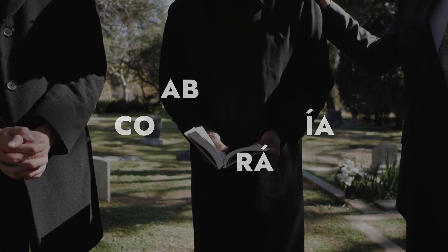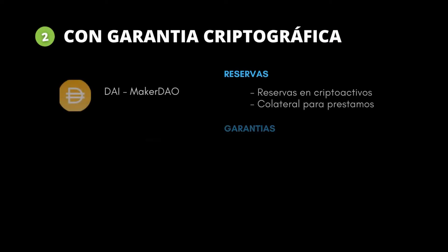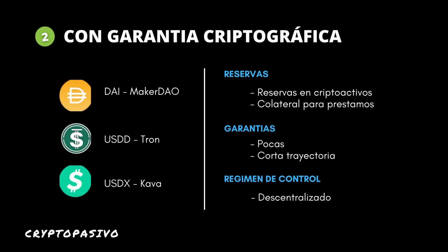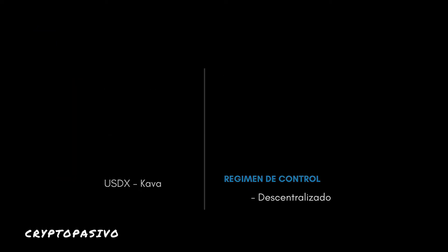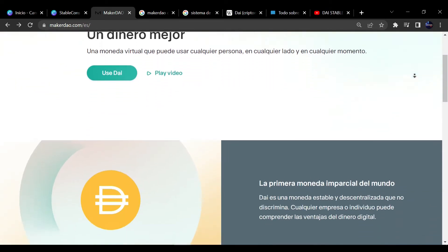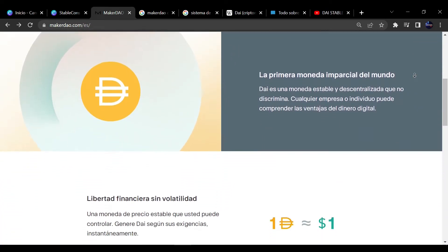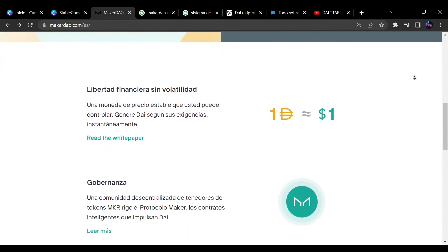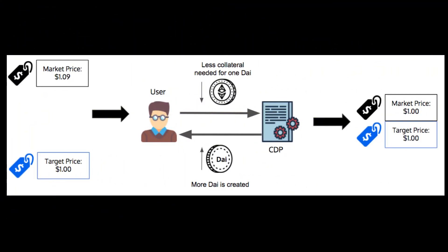Este tipo de stablecoins están respaldadas por un colateral, un criptoactivo que actúa como fondo de reserva para la moneda estable. El caso más famoso es el de DAI, la moneda estable de MakerDAO. MakerDAO ofrece un mecanismo para realizar préstamos en su moneda estable DAI a cambio de depositar una cantidad de colateral en su criptomoneda. Cuando la garantía de un préstamo cae por debajo de un determinado punto, el préstamo se liquida, pudiendo así mantener el precio de DAI.